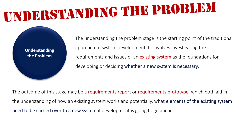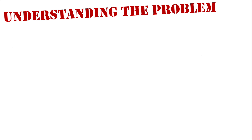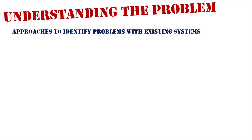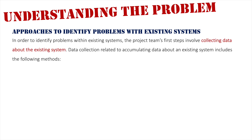So how do we find out what the requirements are, and what are the problems within the existing system that determine whether we need to develop a new one? We need to take a few different approaches to analyzing the system. To identify problems, the project team's first steps involve collecting data about the existing system. Data collection methods include the following.